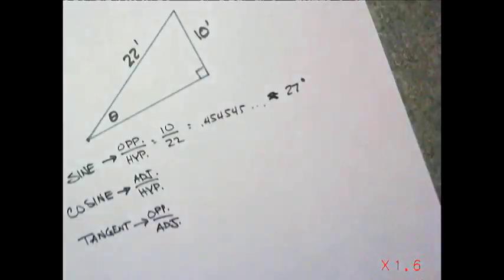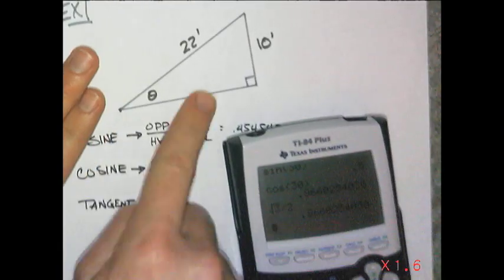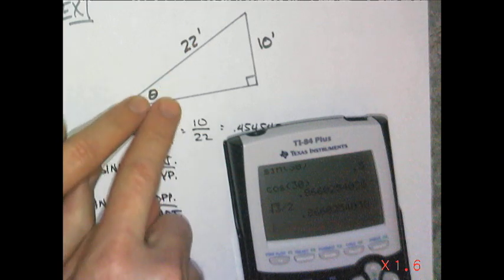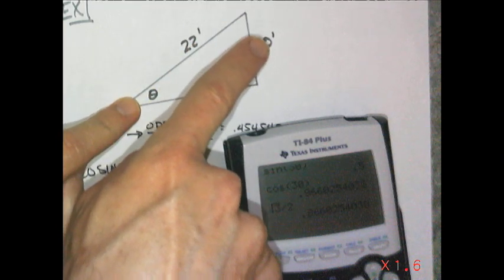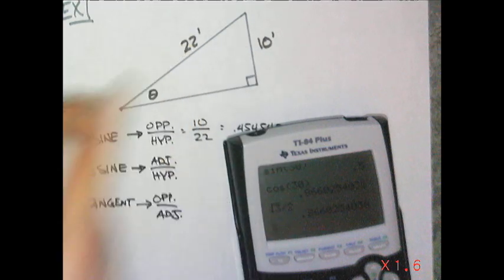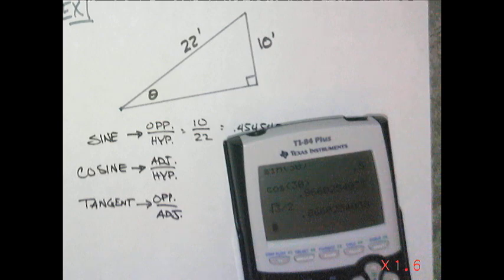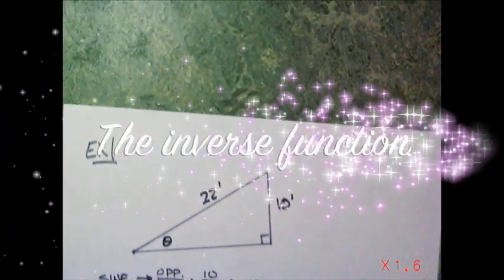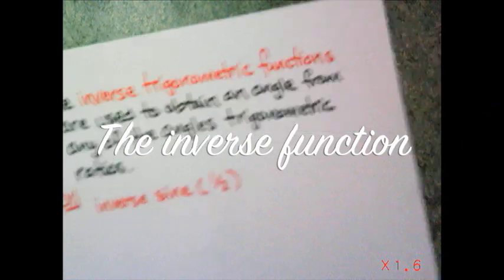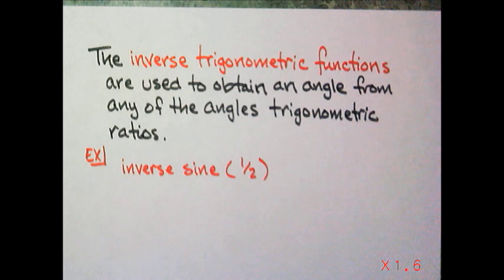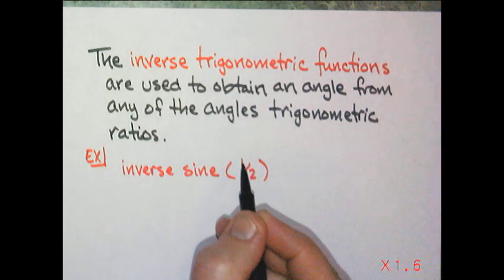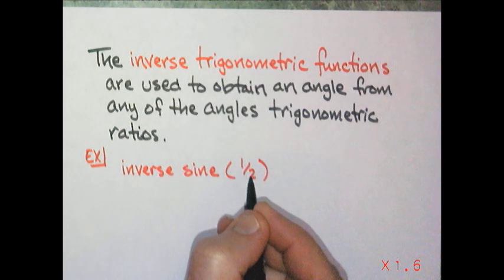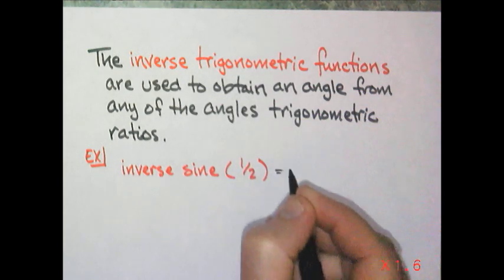So how do we get the angle once we have the relationship? In this case, I'm going to compare the opposite to hypotenuse. So I'm going to use the sine, and I'm going backwards on the sine. And that is called an inverse function. And the inverse function of trigonometric functions are used to obtain an angle from any of the angles trigonometric ratios. For instance, if I do the inverse sine of one half, you know what that is. So what angle has a relationship of opposite to hypotenuse of one half? And that's going to be 30 degrees.